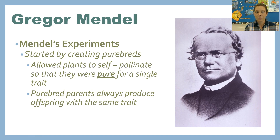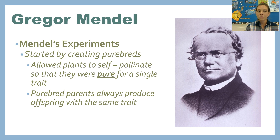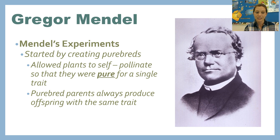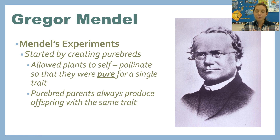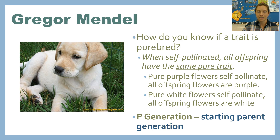Now we have to get into Mendel's experiments — what did he do that allowed him to draw conclusions about how traits are passed down? He started by creating purebred pea plants. He allowed plants to self-pollinate, breeding with themselves asexually so that they were pure for a single trait. Purebred parents always produce offspring with the same trait. So if all of their offspring have that exact same trait, you consider the parent plant purebred for that trait.